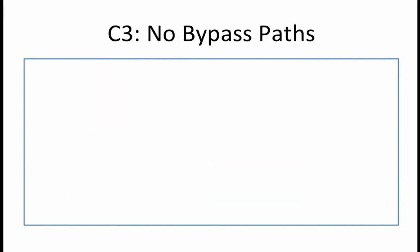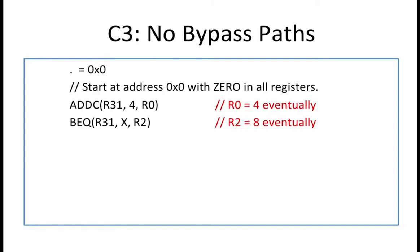When run on C3, which does not have any bypass paths, some of the instructions will read stale values of their source operands. Let's go through the example in detail. The ADDC and BEQ instructions read R31, which is 0, from the register file, so what they ultimately produce does not change. However, you must keep in mind that the updated value of the destination register will not get updated until after that instruction completes the writeback stage of the pipeline.